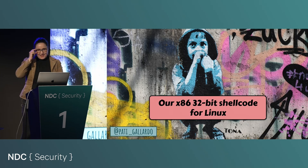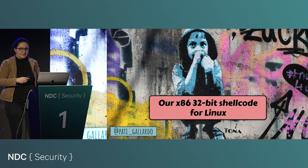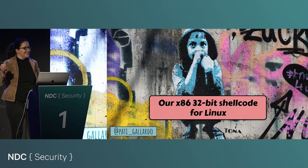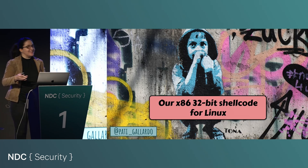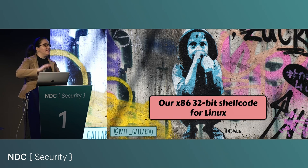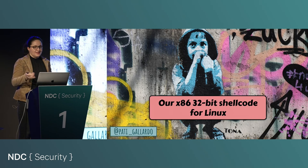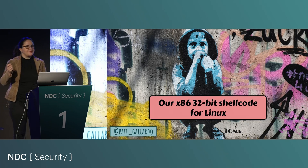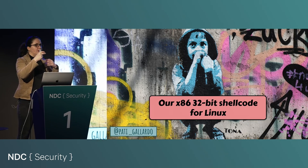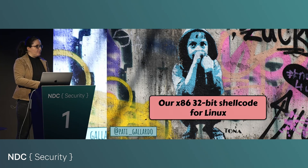We won't care about that application from this point on — we will care about the binary itself. In this presentation we're doing 32-bit mostly because it's smaller, fits better on a slide, and because the pointers are smaller we don't have a lot of null bytes in our exploit. We're going to go through how we would design the shellcode — the exploit we want to run — and then we will do the same thing in ROP.